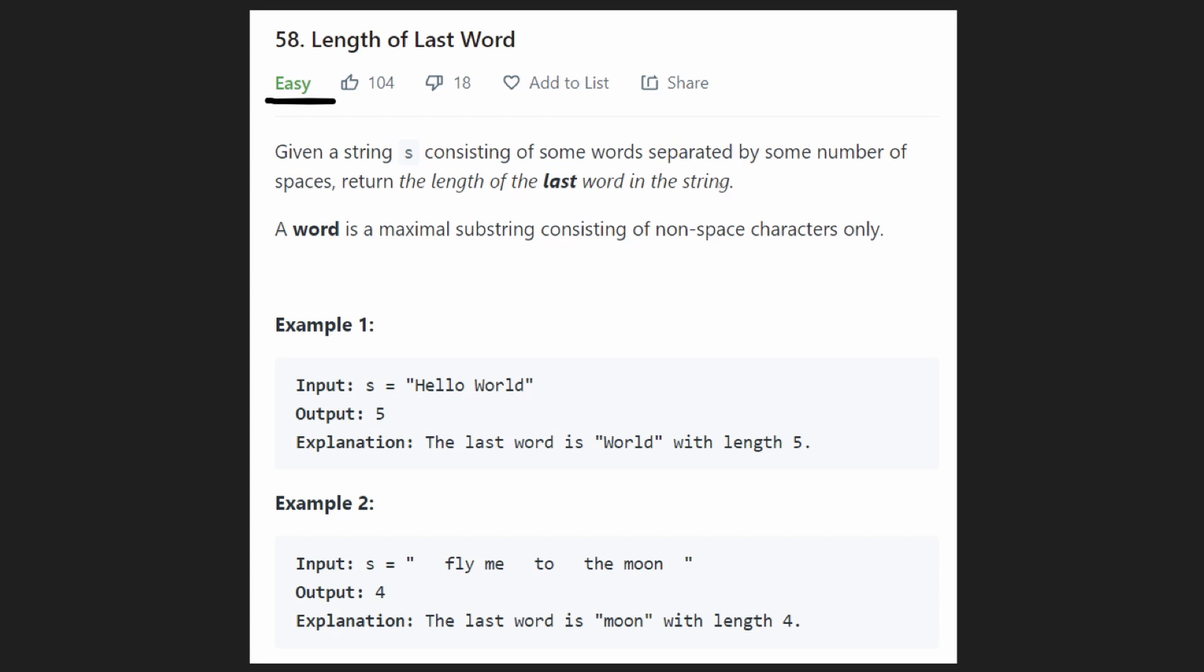So let's take a look at an example. The first example, we have the first word hello separated with a single space from the next word world. And then that's kind of the end of the string. So what's the length of the last word? Well, the last word is here, world. Its length is five, so we can return five.